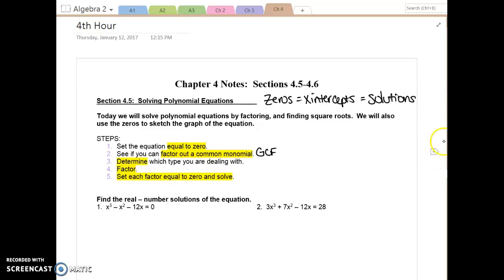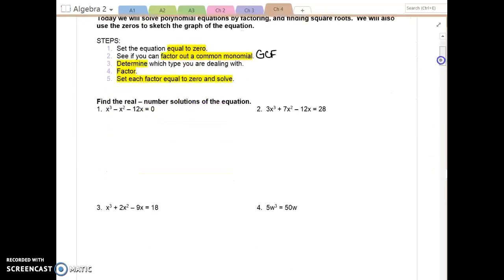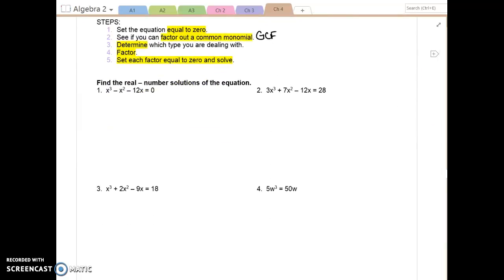Let's take a look at number one: x cubed minus x squared minus 12x equals zero. Step one, set it equal to zero, done. Step two, is there a common monomial factor? Is there a GCF that we can factor out of all three terms? Yes, x. That leaves us with x squared minus x minus 12 equals zero.